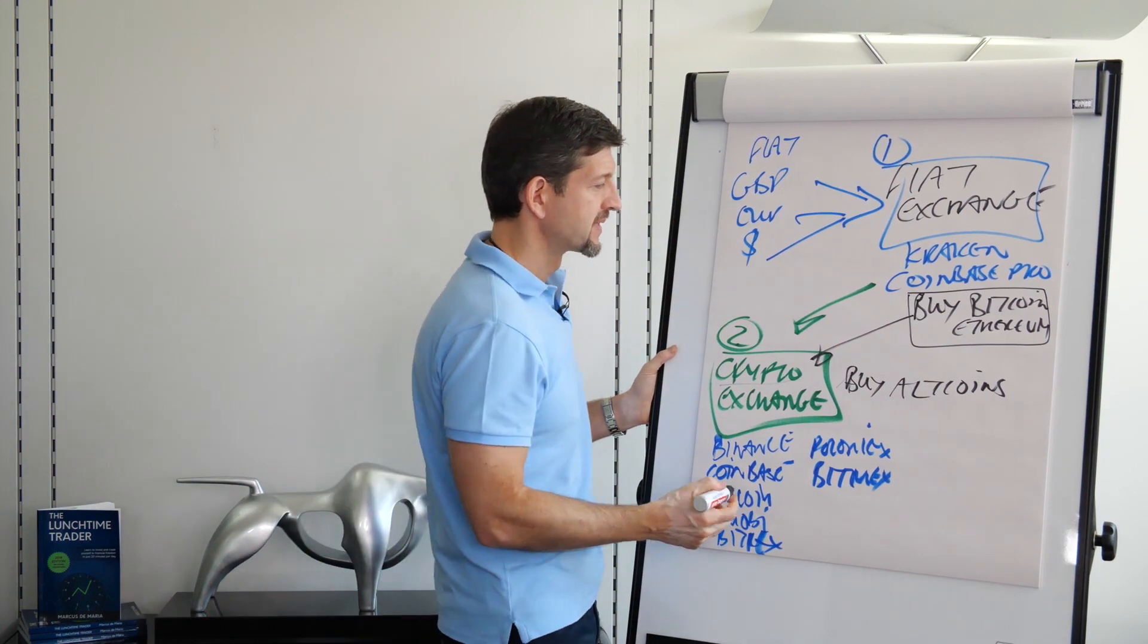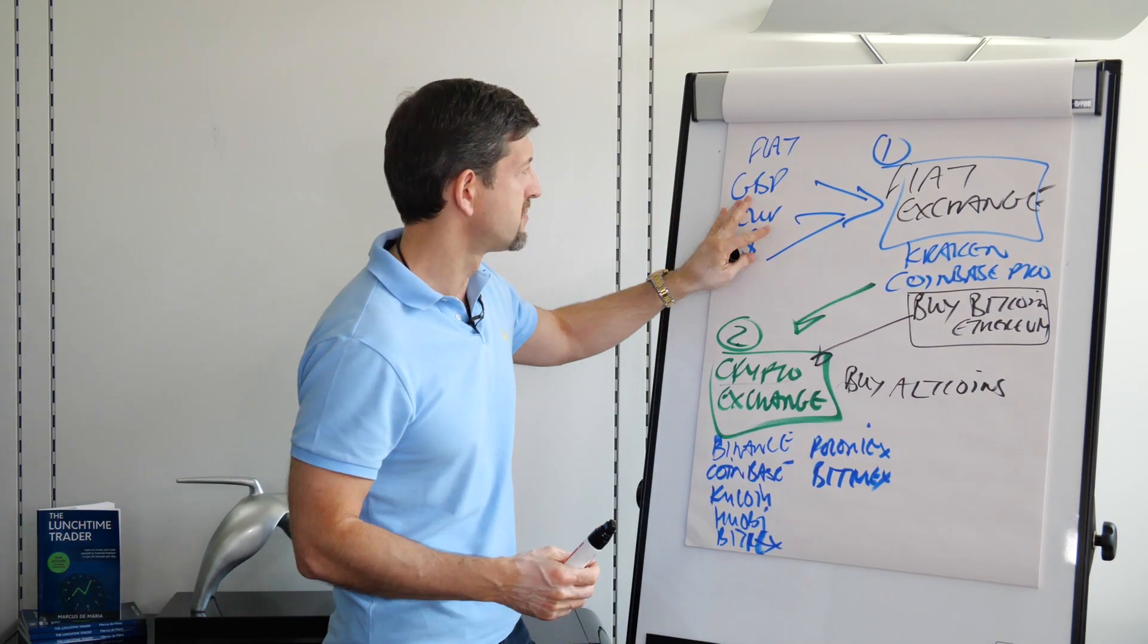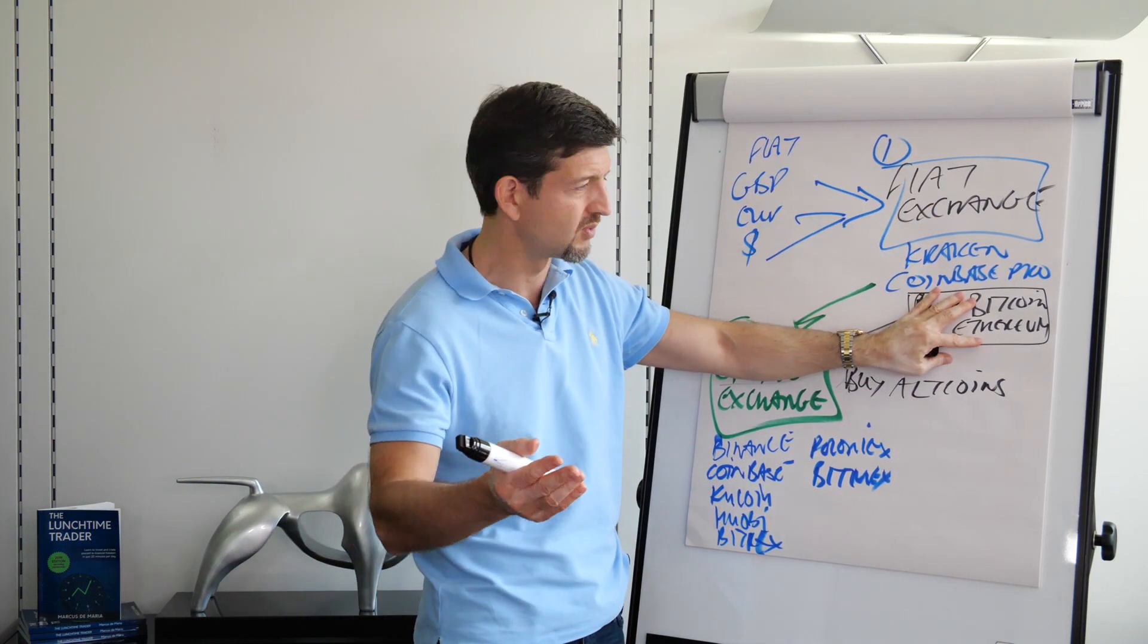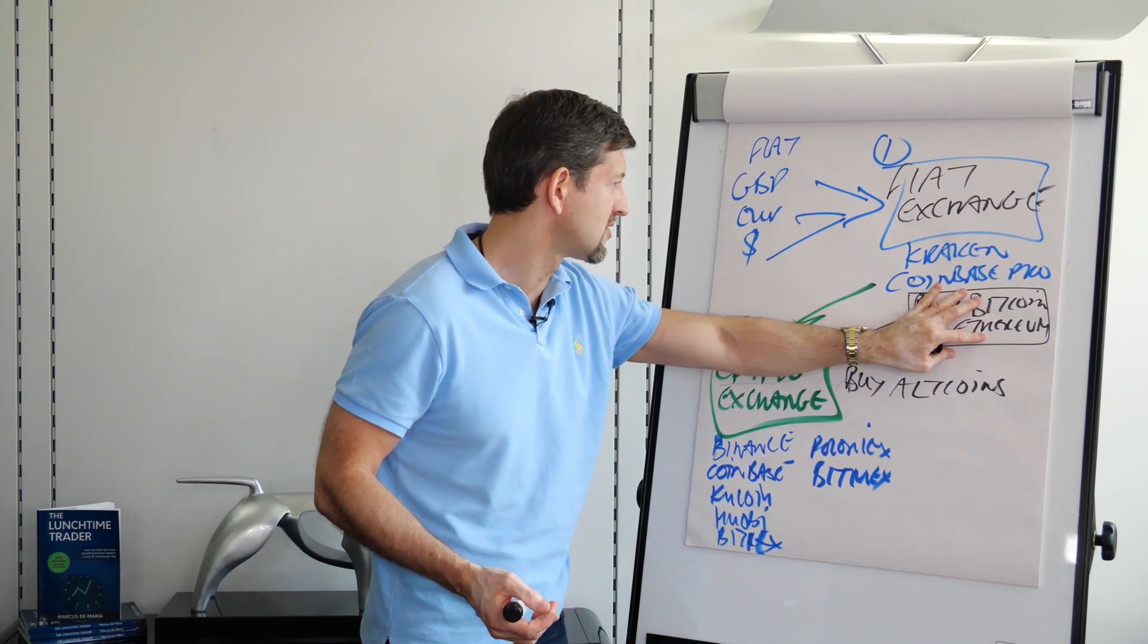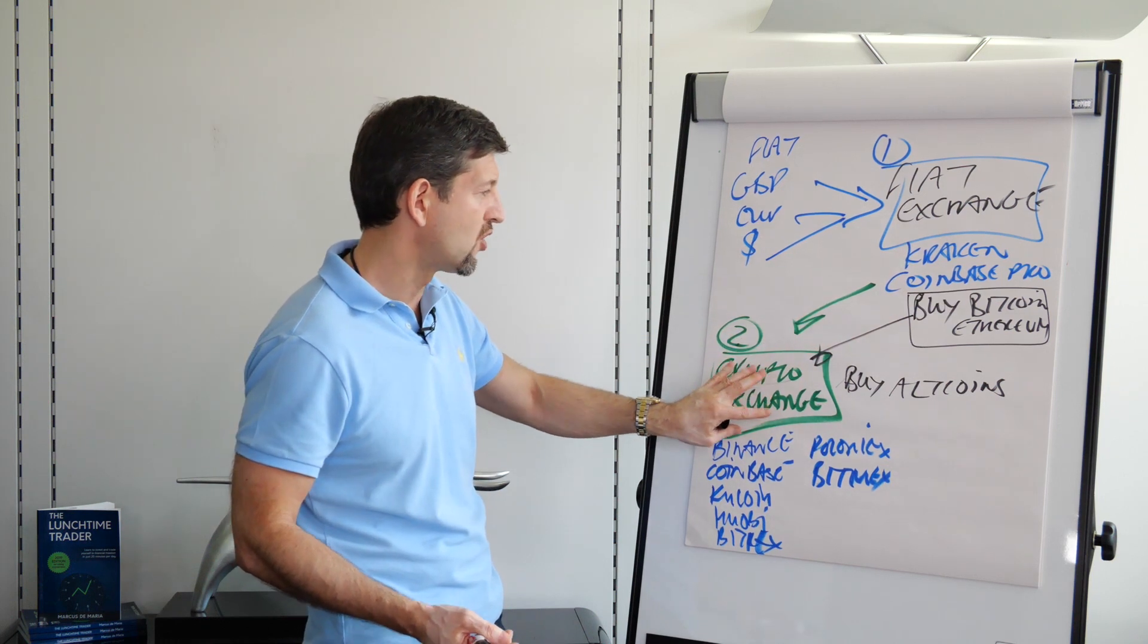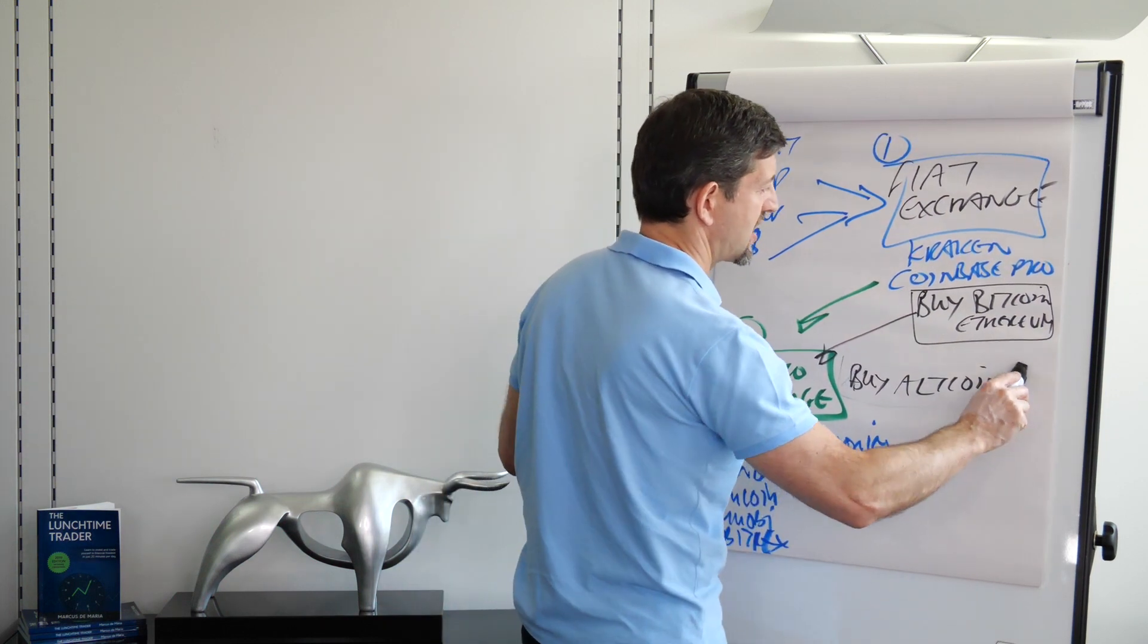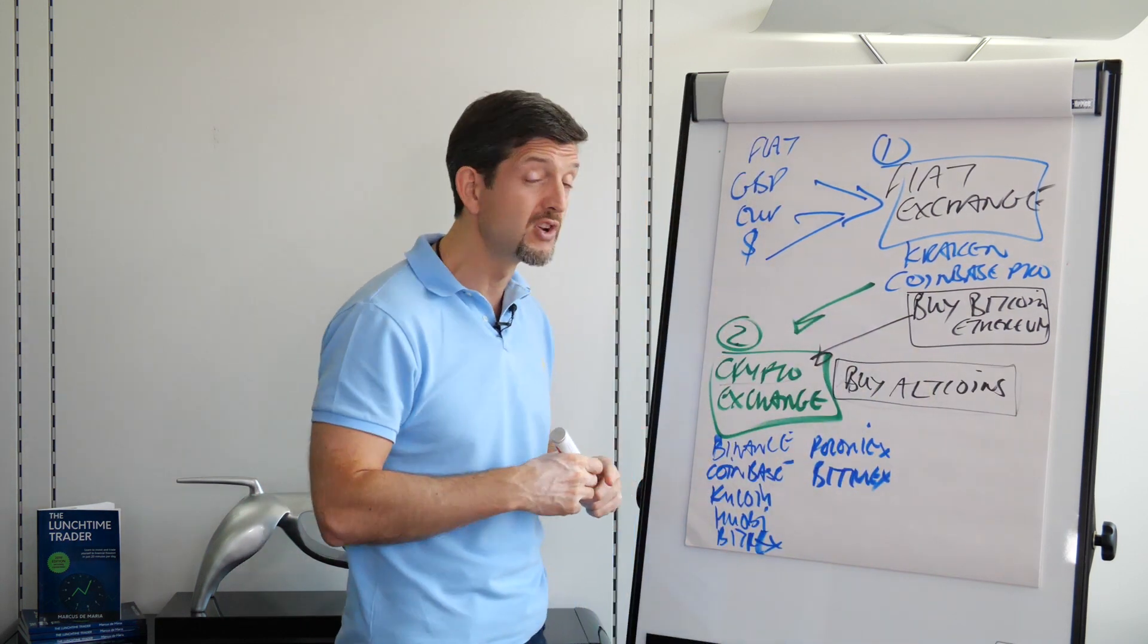So again, your money goes to the fiat exchange, on the fiat exchange you're going to buy Bitcoin, probably Bitcoin or Ethereum, and then you're going to transfer your Bitcoin to your crypto exchange and on your crypto exchange you're going to buy whatever other coin you wanted to buy.